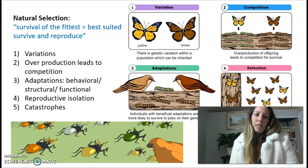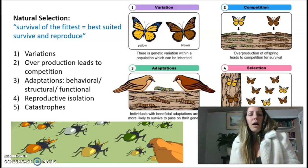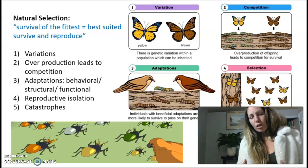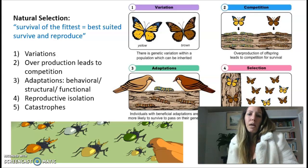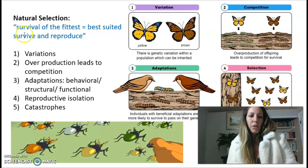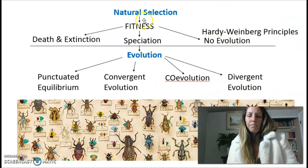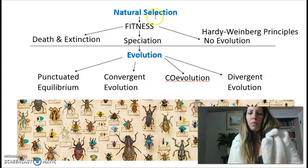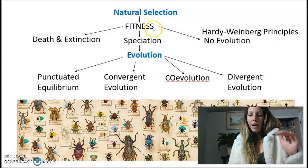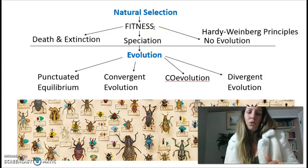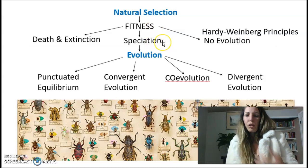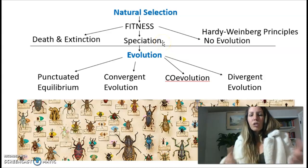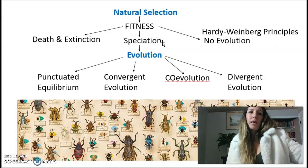In order to evolve into something new, natural selection also states that if you have reproductive isolation, that will also help lead to a new species, or speciation. And of course, catastrophes help with that. Here is just a quick flow diagram that takes you through how natural selection can lead to evolution. Natural selection gives us high fitness — the ability to survive and reproduce — which in turn can lead to speciation, the production of a new species.